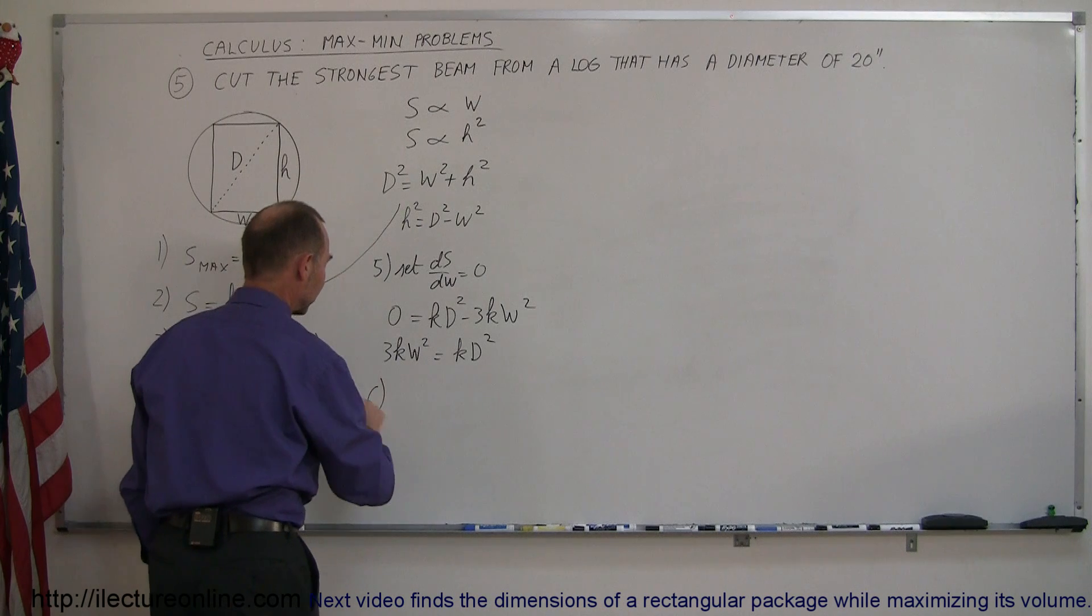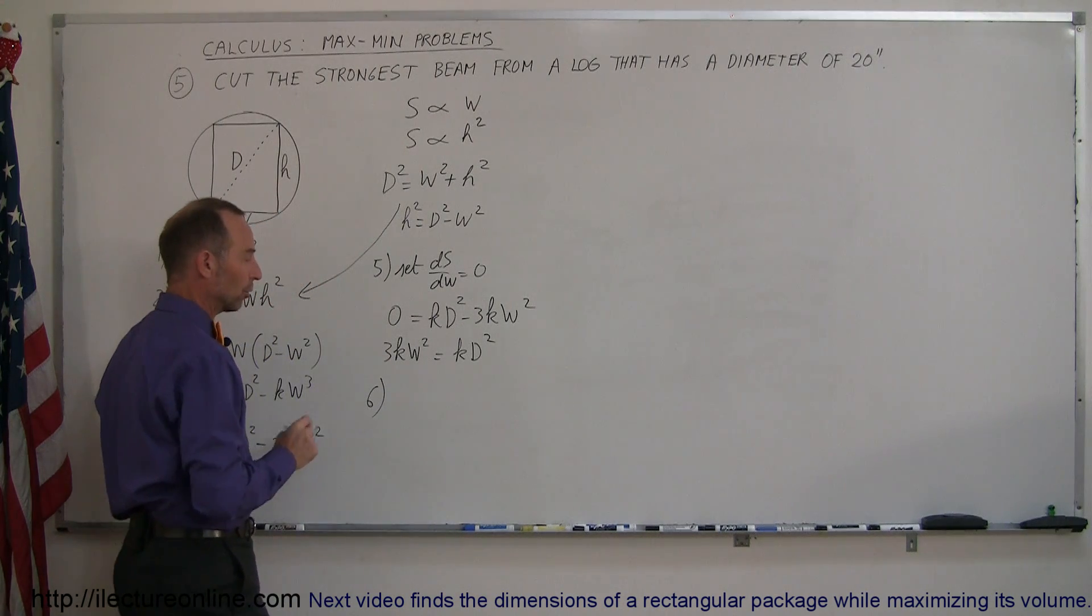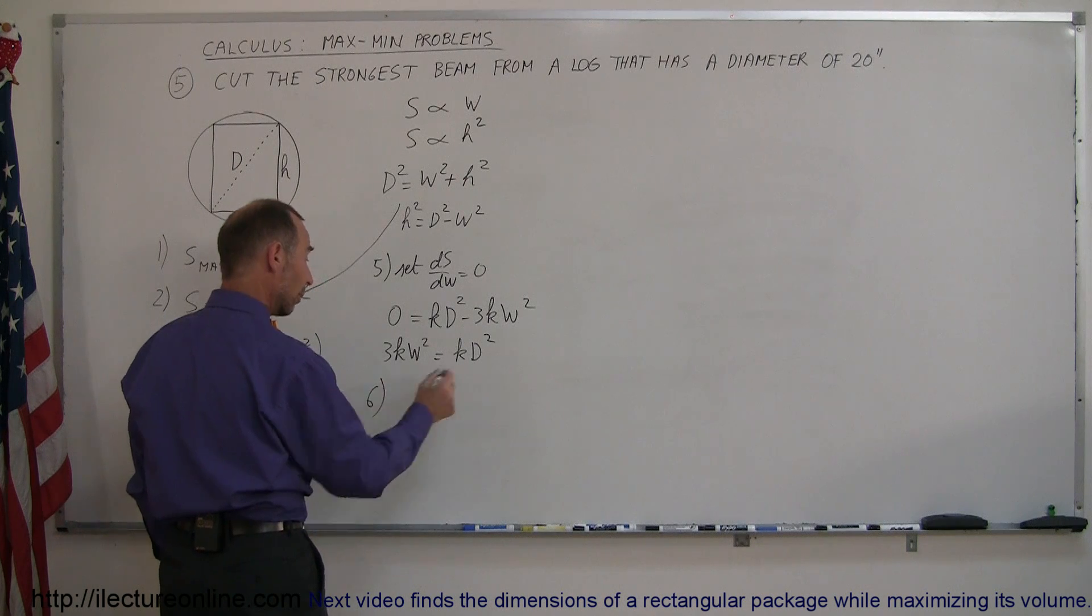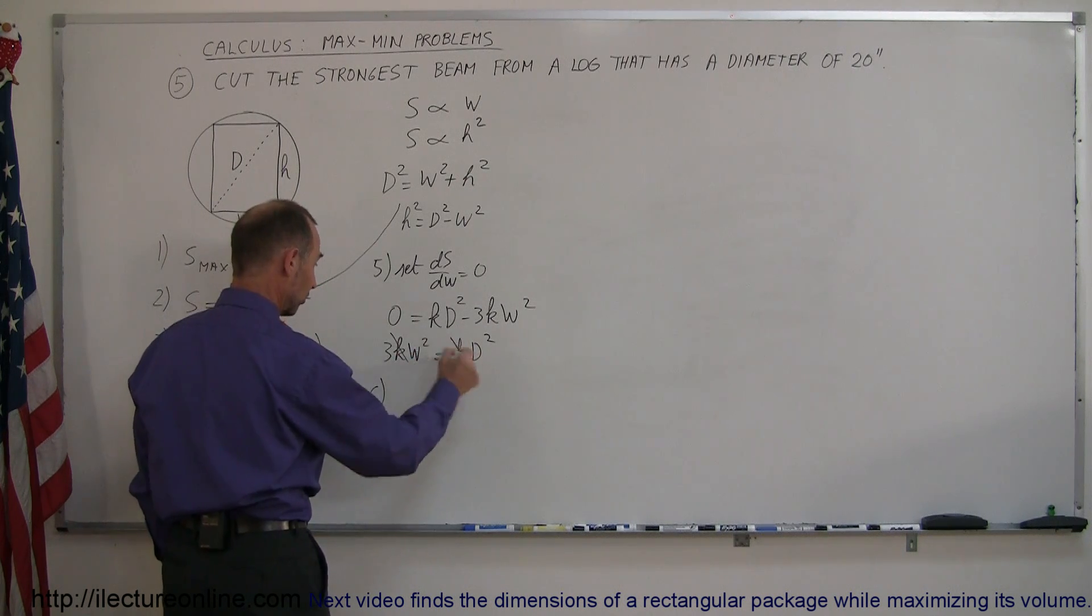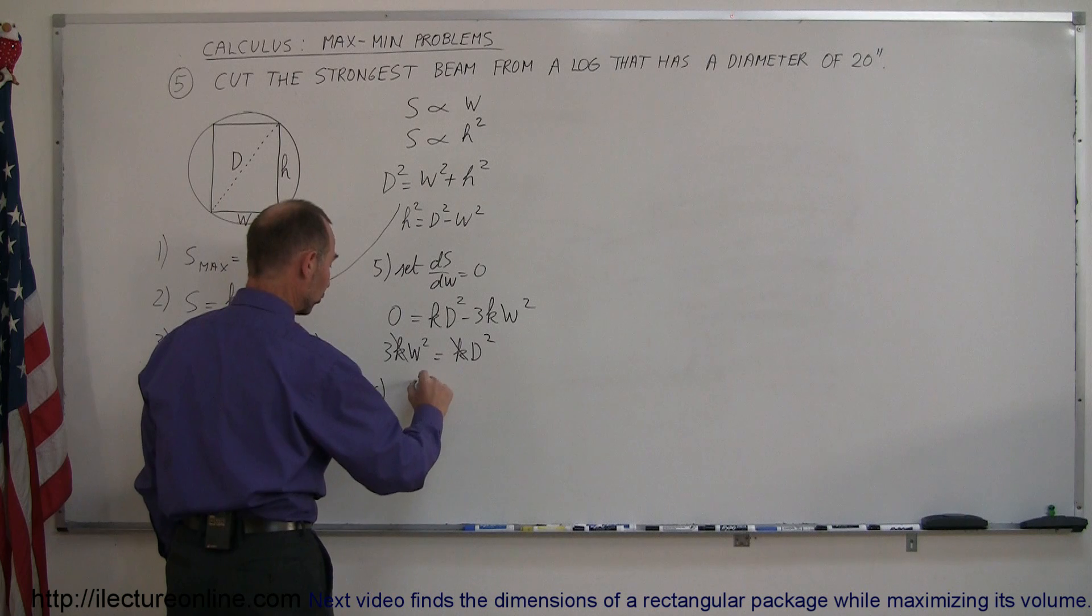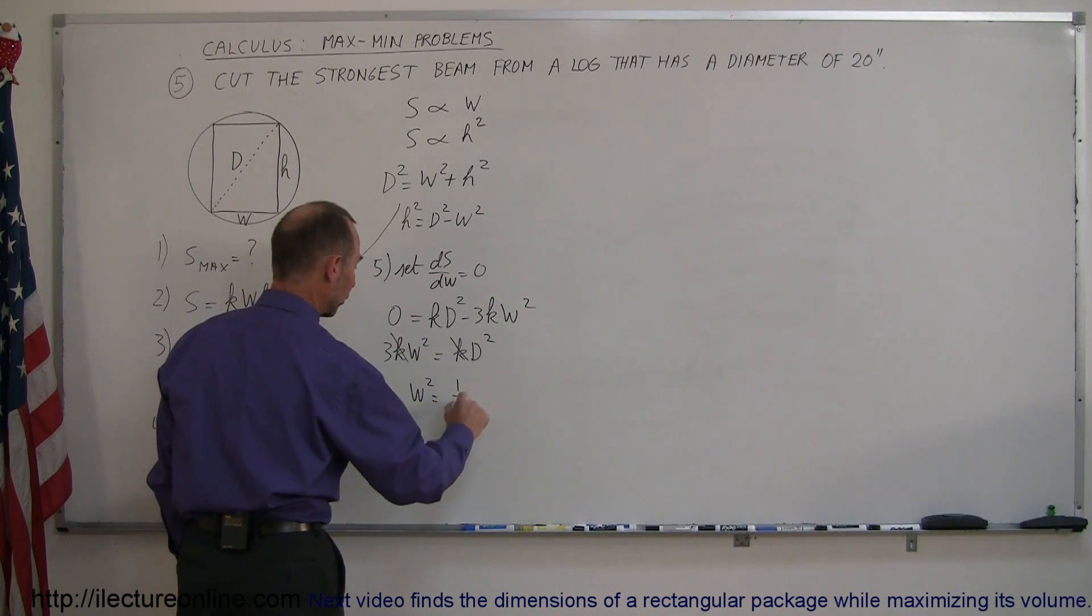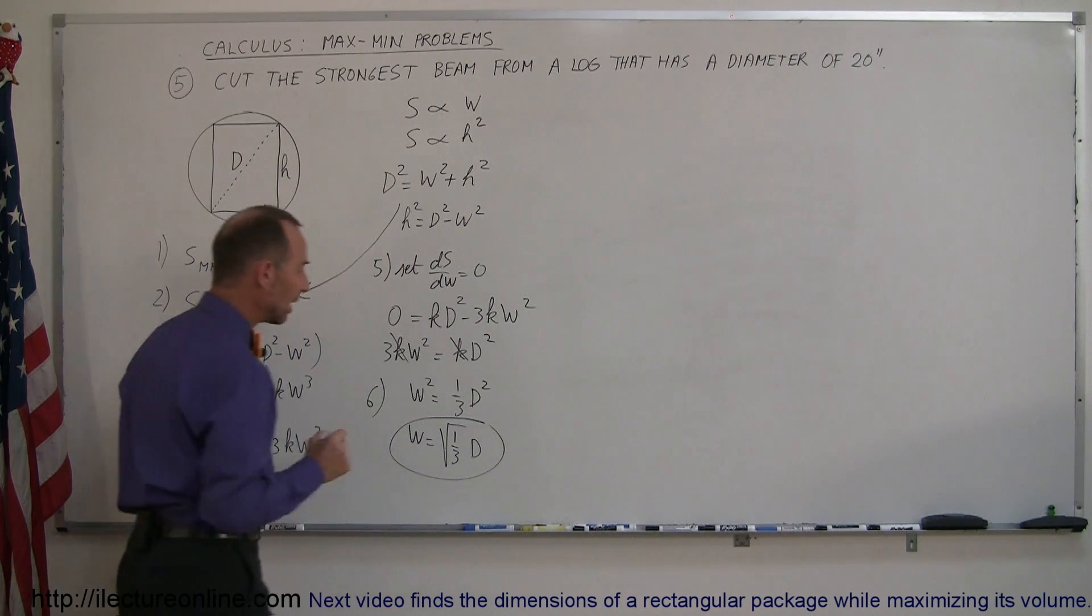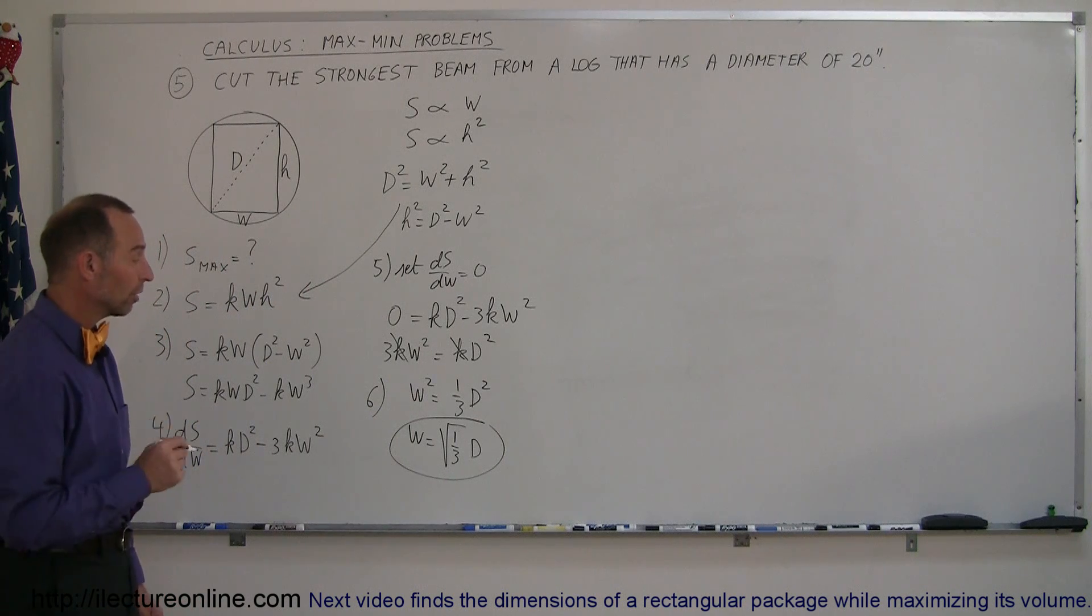And now finally, step number six: solve this for w—not w² but w. Divide both sides by 3k. Well, anyway, we have a k on both sides of the equation so that cancels. So we have w² is equal to one-third d², or w is equal to the square root of one-third times d. So that would be the way in which you want to cut the beam. The width should be the square root of one-third times d.